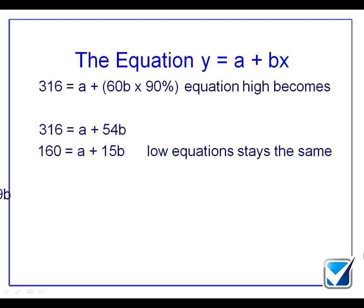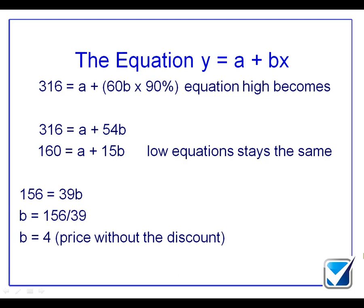And now I have my 316 and my 160 because the low equation stays exactly the same. And we can now simply solve this equation to work out that 316 minus 160 gives me 156. And that will now equal 39Bs, which gives me a value of B, which will be $4. And again, notice this. That's the price without the discount. That's really important to me.